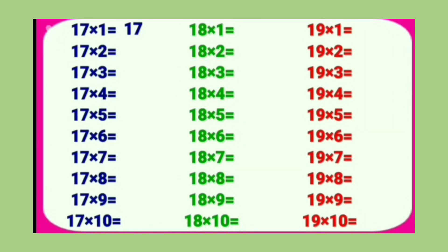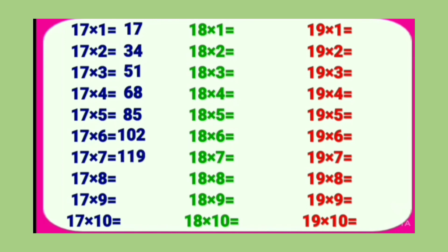Table of 17: 17 1's are 17, 17 2's are 34, 17 3's are 51, 17 4's are 68, 17 5's are 85, 17 6's are 102, 17 7's are 119, 17 8's are 136, 17 9's are 153, 17 10's are 170.